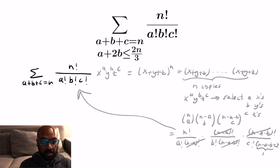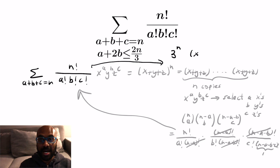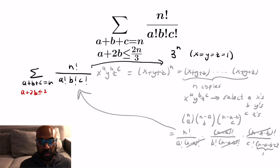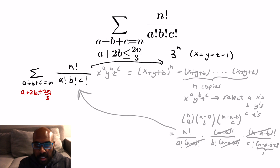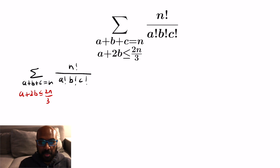So if you want to know asymptotically what this sum is, it's actually 3 to the n by substituting x equals y equals z equals 1. Now, what if we add in the condition that a plus 2b is less than or equal to 2n over 3? Is it still exponential, or is it something like 3 to the n times 1 over n, or 3 to the n over root n? It's unclear asymptotically what's going on with this expression.